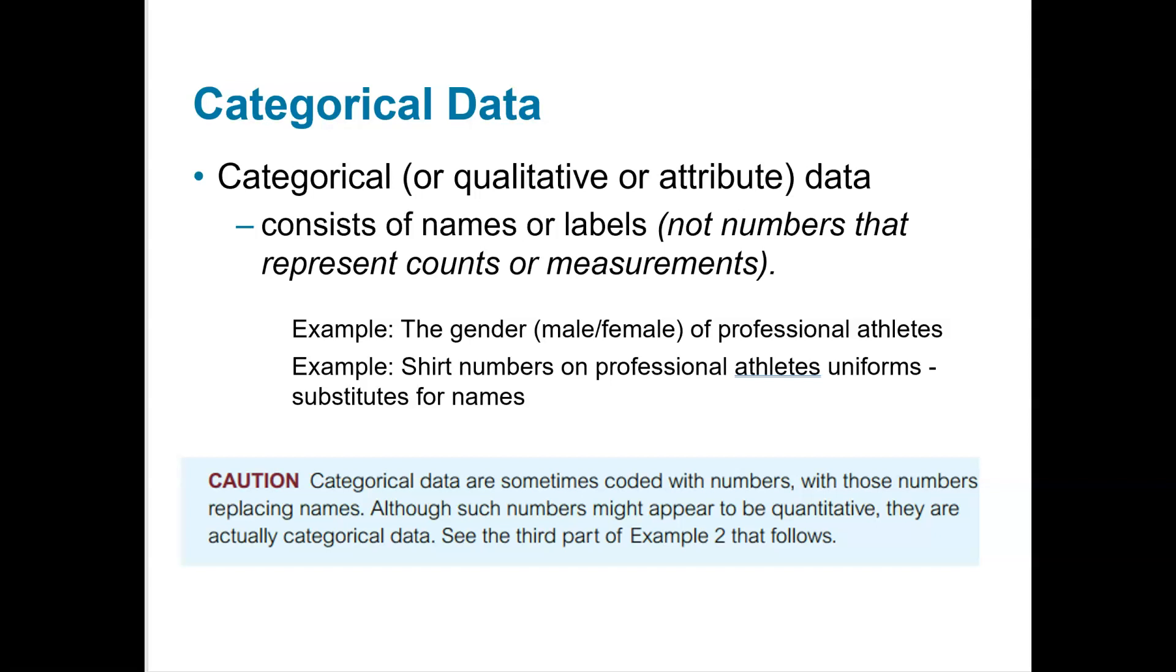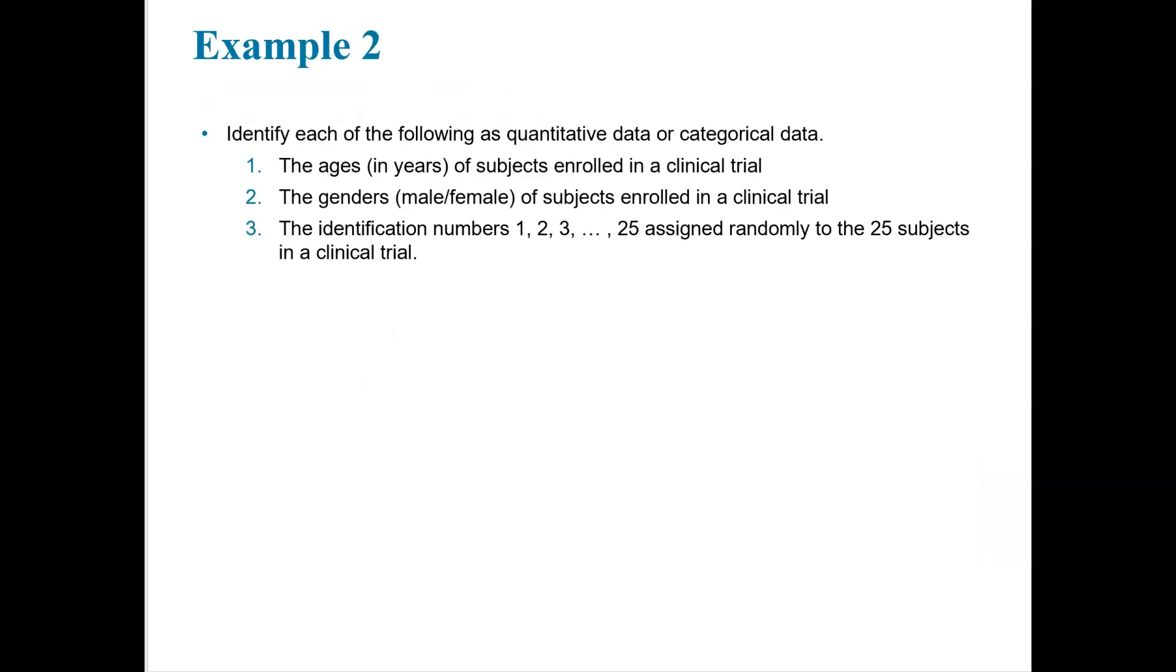So data can be split into two, qualitative and quantitative. All right, so we've got this example here. Identify each as quantitative or categorical or qualitative. So the ages of the subjects, the genders, male and female, and the identification numbers. So the ages of subjects is a numerical count that we can measure. So that is going to be quantitative.